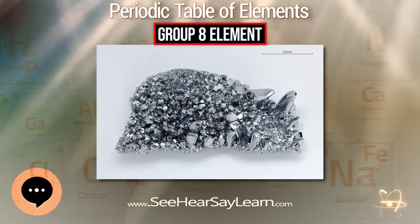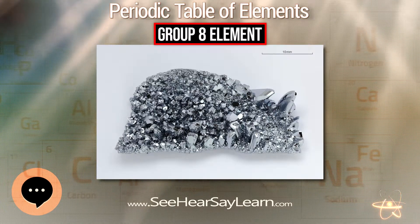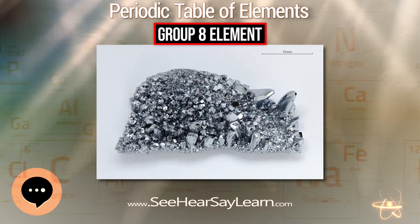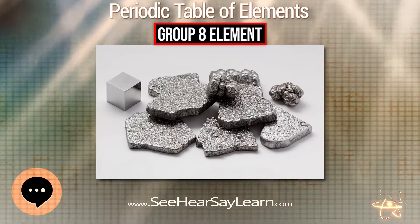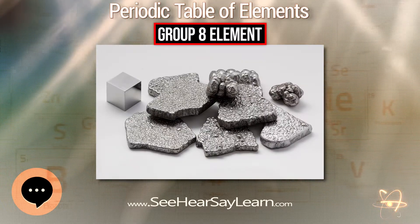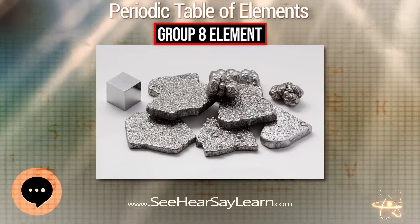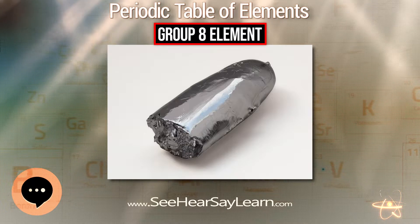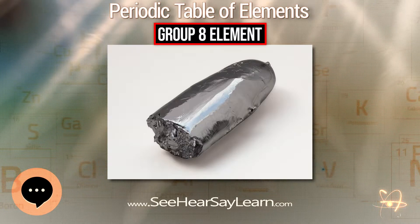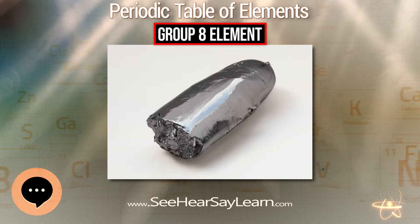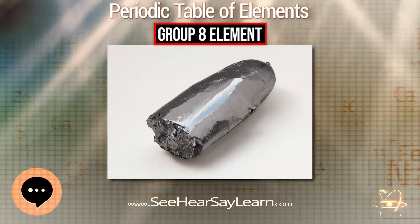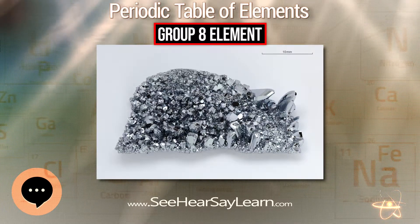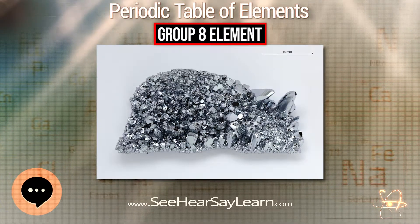Group 8 is the modern IUPAC name for this group. The old style name was Group VIIIB in the CAS US system, or Group VIIIA in the old IUPAC European system. Group 8 should not be confused with the old style group name VIIIA by CAS US naming — that group is now called Group 18.